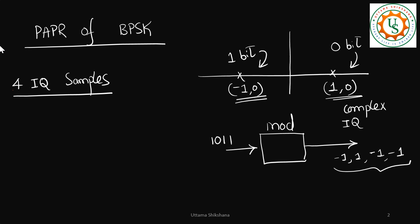Now, PAPR calculation. First, the peak power. In these 4 samples, what is the peak value? It is 1, or in the negative direction, minus 1. Basically, the modulus of 1 or minus 1 squared, which will be 1 only.